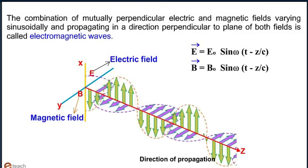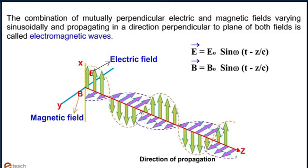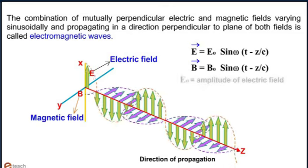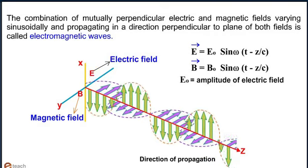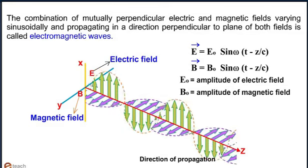Magnetic field vector is given by B equals B0 sin omega t minus z over c, where E0 is the amplitude of electric field and B0 is the amplitude of magnetic field.